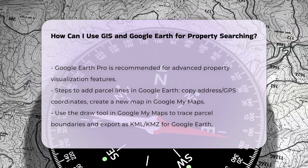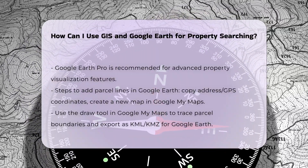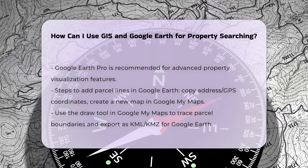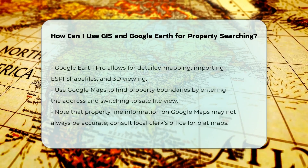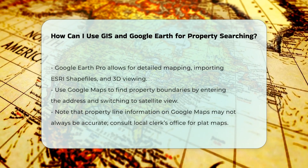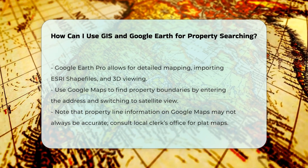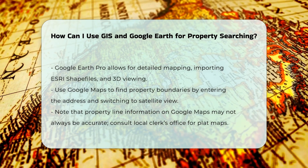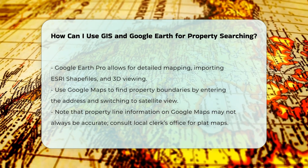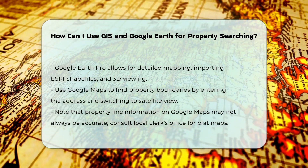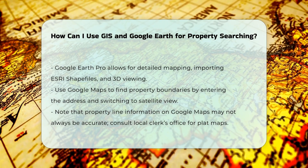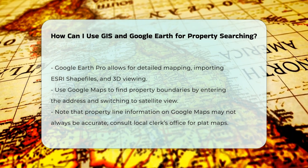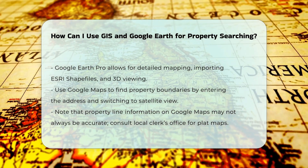Visualizing property details. Google Earth Pro allows you to create detailed maps, import ESRI shapefiles, and draw polygons or points. You can also use the 3D view and other layers to get a comprehensive look at the property. For example, you can remove the 3D buildings layer to get a flat view, or use the historical satellite imagery to see changes over time.